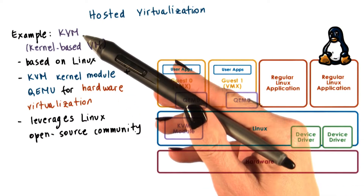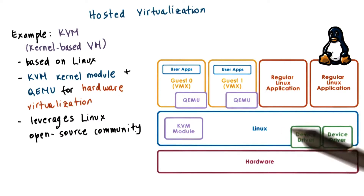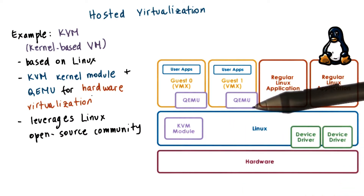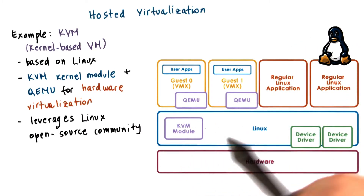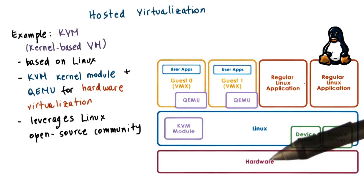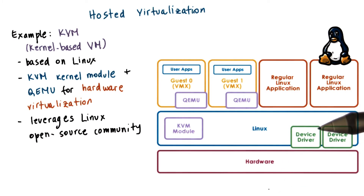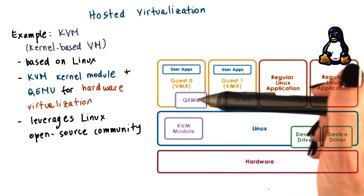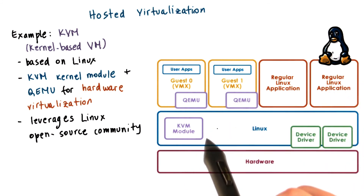A huge benefit for KVM has been that it's able to really leverage all of the advances that are continuously being contributed to the large Linux open source community. Because of this, KVM can quickly adapt to new hardware features, new devices, new security, bugs, or similar things. In fact, the KVM module was originally developed as a Linux module in order to allow regular Linux applications to take advantage of some of the virtualization-related hardware that started appearing in commodity platforms. Users then realized this could be used to actually run guest operating systems and regular virtual machines, and so three months later, KVM was an actual virtualization solution that was part of the mainstream Linux kernel.